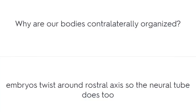Why are our bodies contralaterally organized? Embryos twist around the rostral axis, so the neural tube does too.